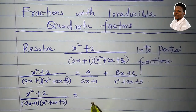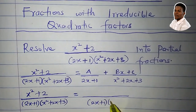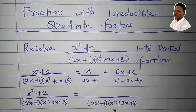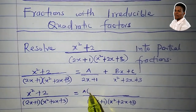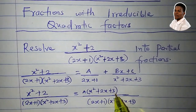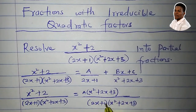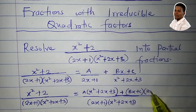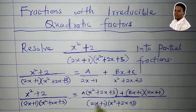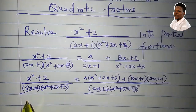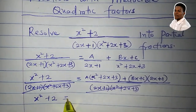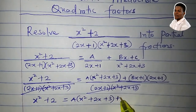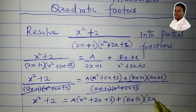If we take the LCM of the right-hand side, we'll have (2x+1)(x²+2x+3). Dividing the LCM by (2x+1) gives (x²+2x+3), times A. Dividing the LCM by (x²+2x+3) gives (2x+1), times (bx+c). So the numerator becomes: A(x²+2x+3) + (bx+c)(2x+1). The denominators cancel, so x²+2 = A(x²+2x+3) + (bx+c)(2x+1).